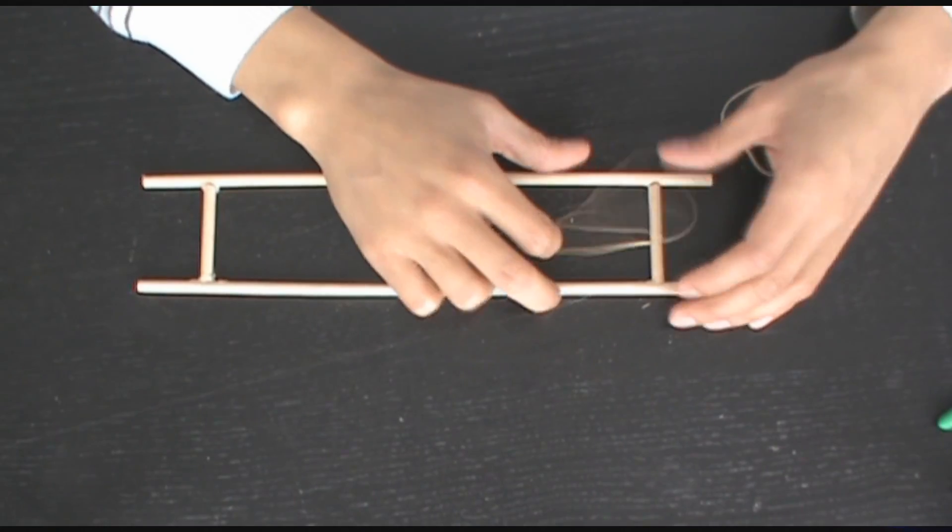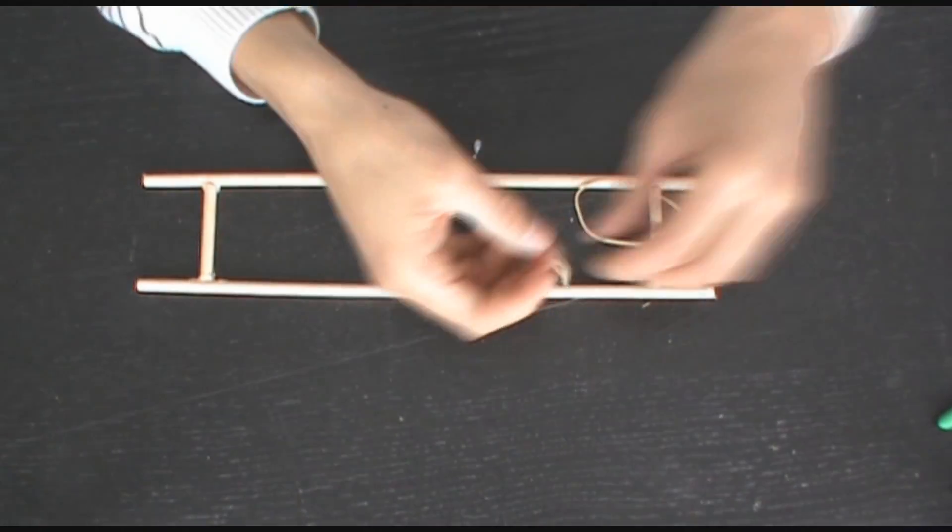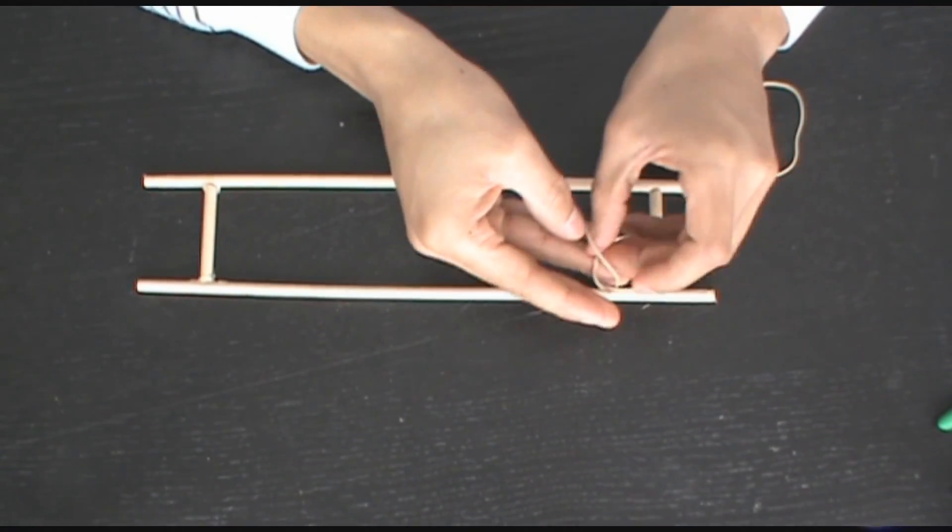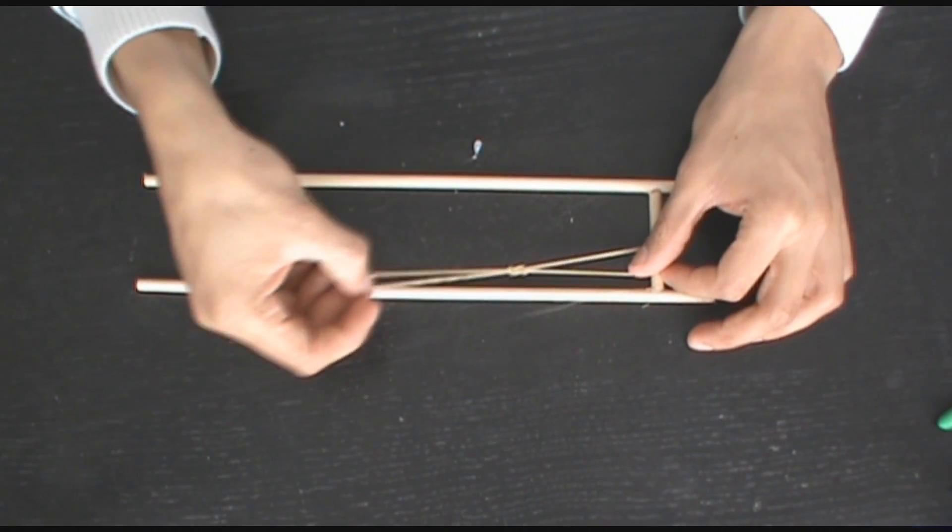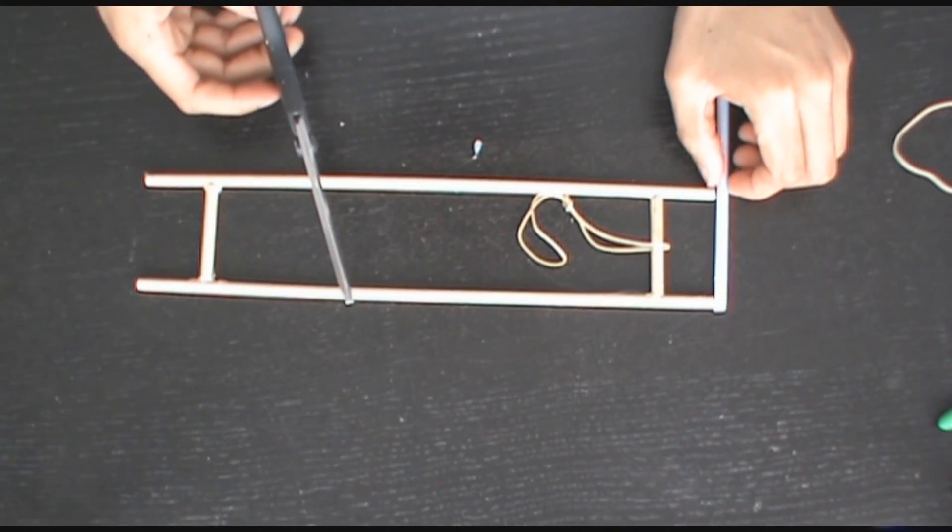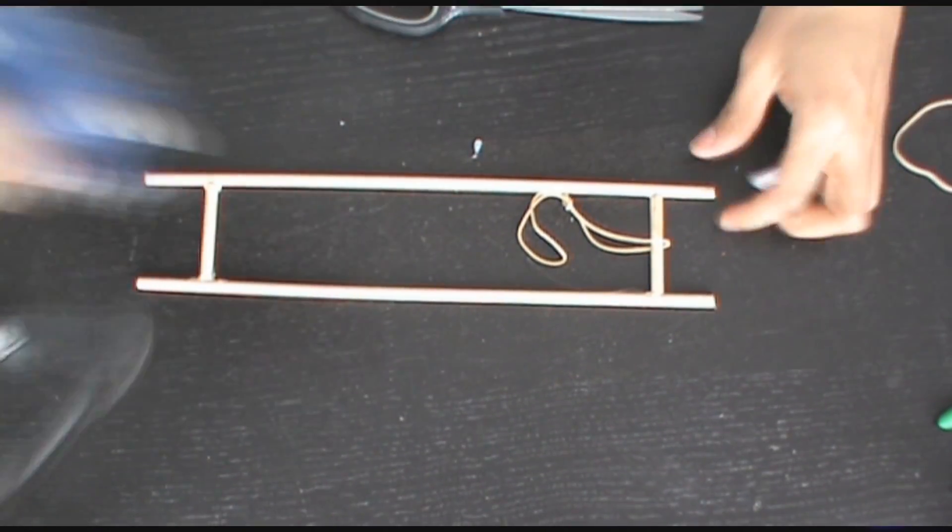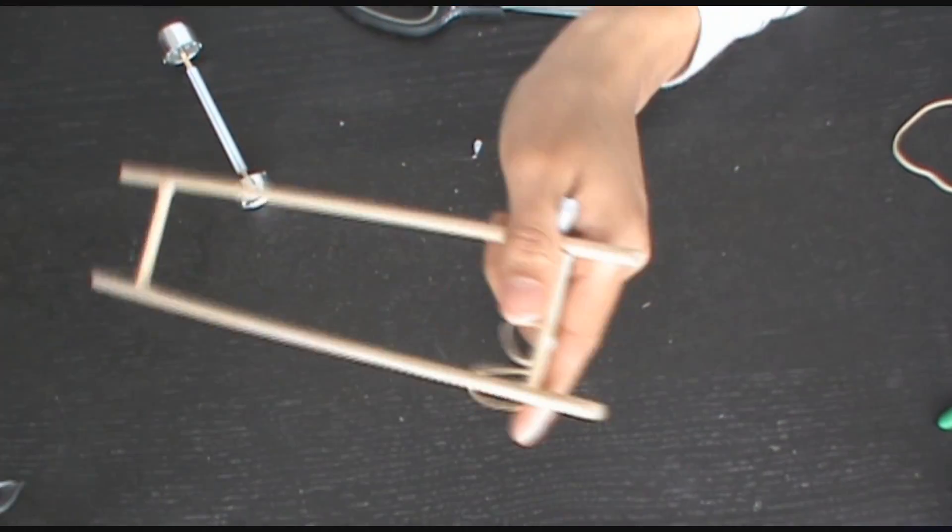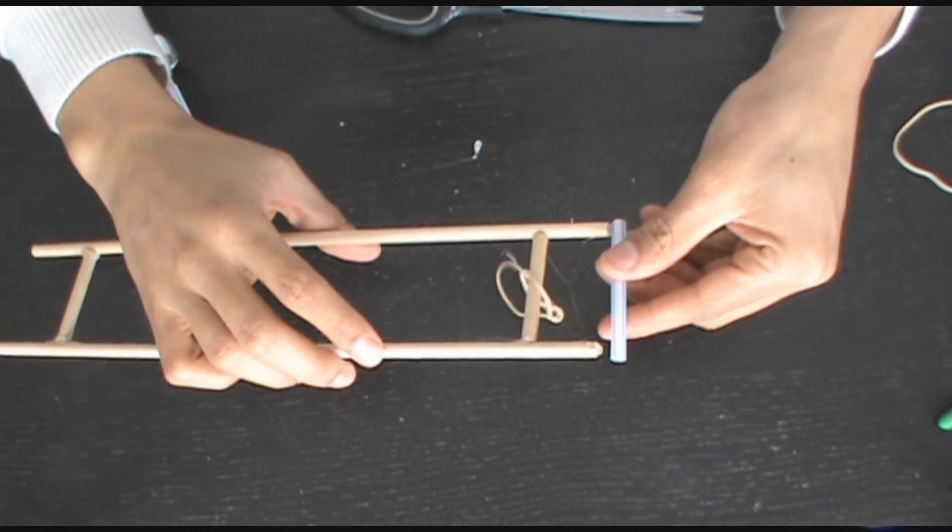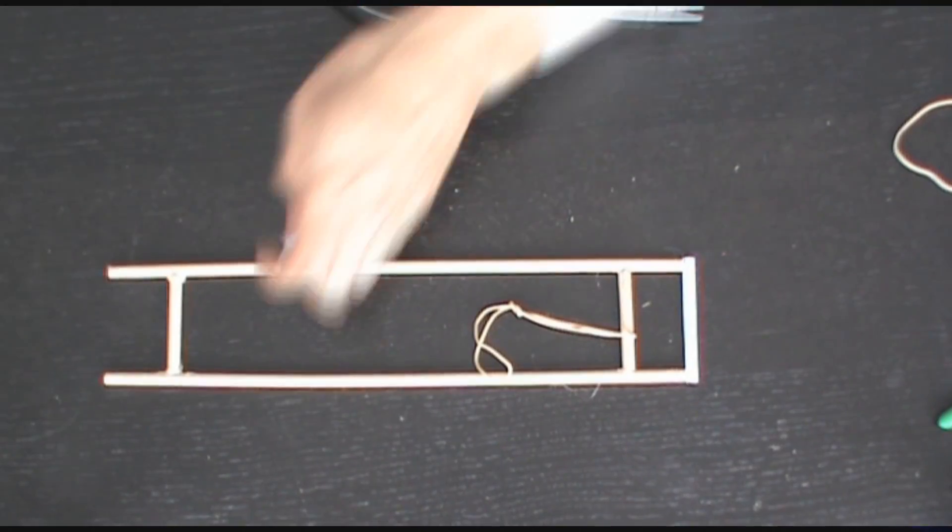Now around one of those short dowels, we want to keep an elastic band, and we're going to tie another elastic band onto that. Now we want to cut out something for our axles to rotate inside of. So I just used a piece of straw, and we're going to cut one piece on each side of the base.